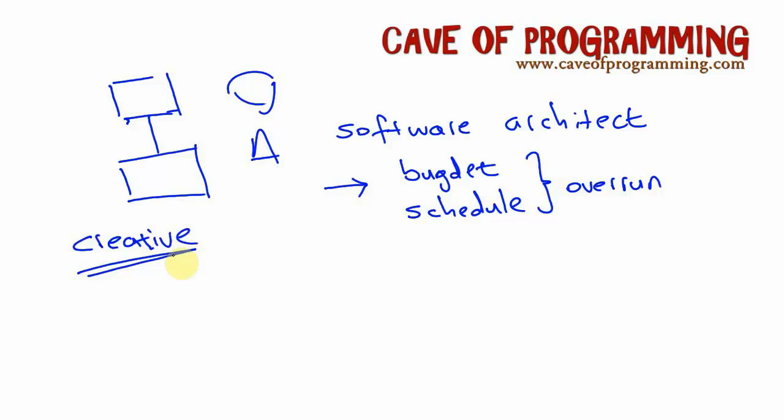I think you have to have an element of designing software as you go along in order to really enjoy the process. For a lot of software developers, and certainly for me, even if you're the one who's going to design it up front, it ends up feeling like the design phase is like filling in a massive form — just incredibly tedious. And then implementing it, which should be the fun part, the creative part, becomes like just dotting the I's and crossing the T's on this form.